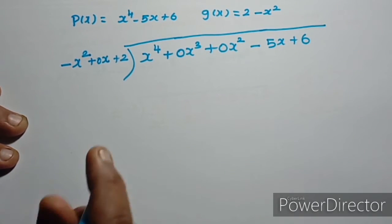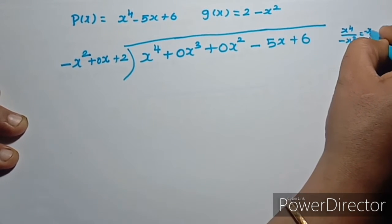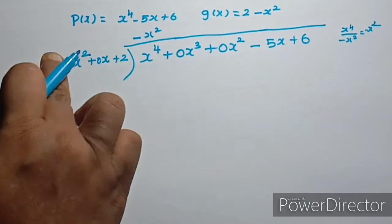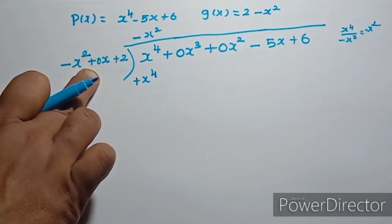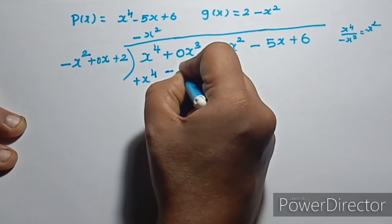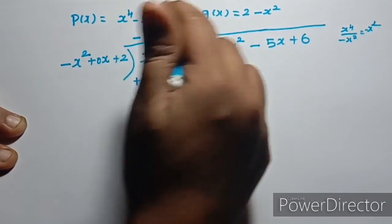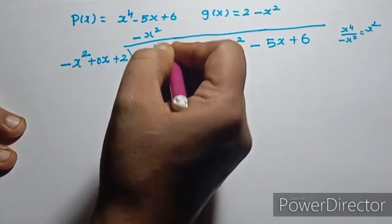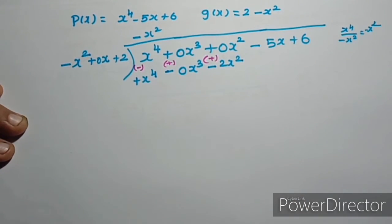First step: what do we do? x power 4 divided by minus x square gives minus x square. Then minus x square into 0x is minus 0x cube, and minus x square into 2 is 2x square.